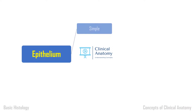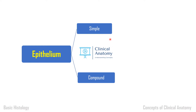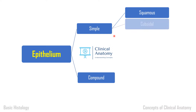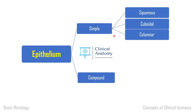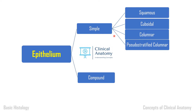Epithelium is divided into simple and compound based on the number of rows of cells. If all the cells lie on the basement membrane, that means simple epithelium — a single row of cells. If there are two or more rows of cells, it is compound epithelium. In simple epithelium, based on the shape of cells, we classify it into squamous, cuboidal, columnar, and pseudostratified columnar epithelium.